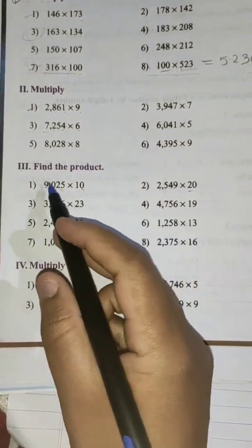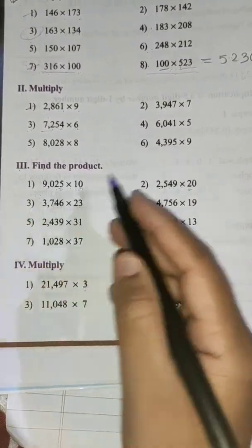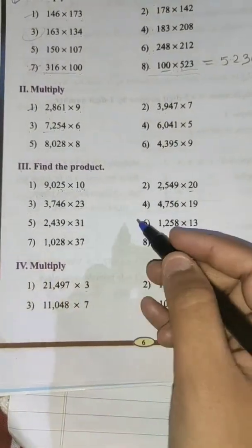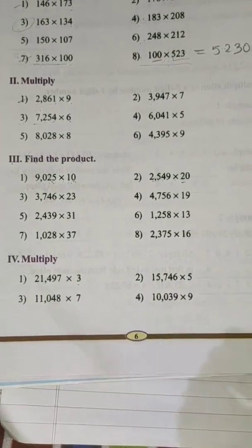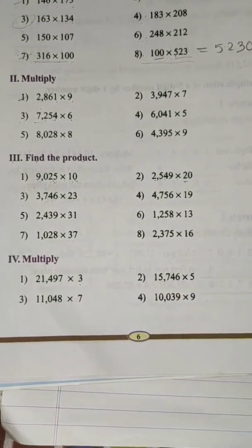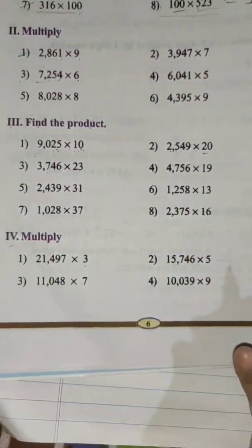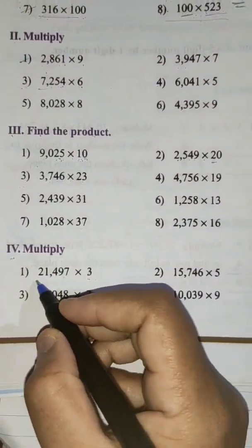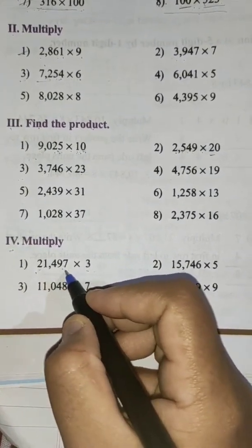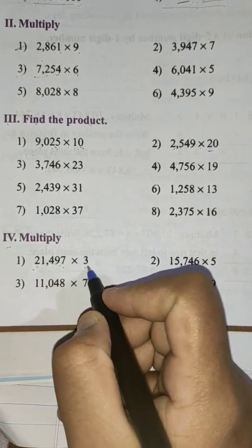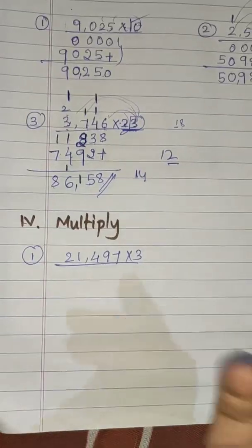I hope you understood how to find the product — that was the third main. We have done examples 1, 2, and 3; just try to do the other problems yourself. Now let's move to the next main, that is the fourth main: multiply. Here you can see it is very easy — we have to multiply a five-digit number by a one-digit number.